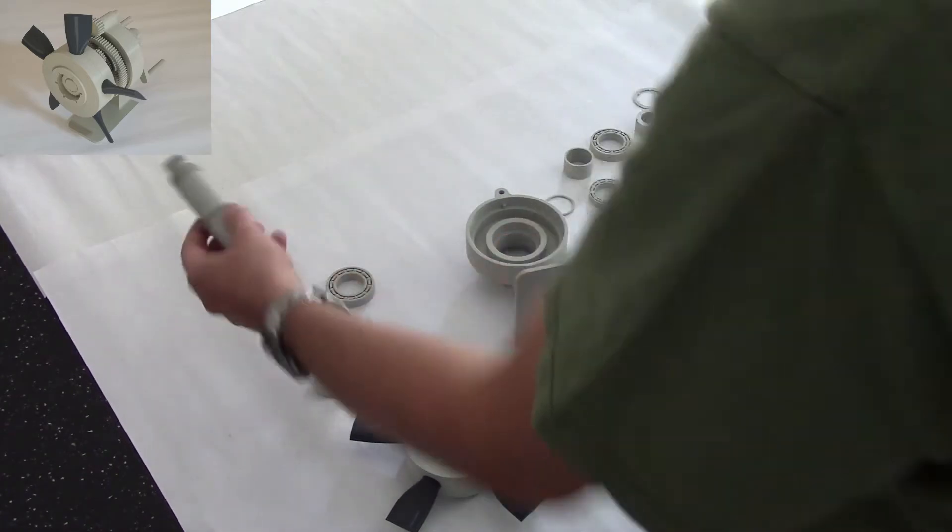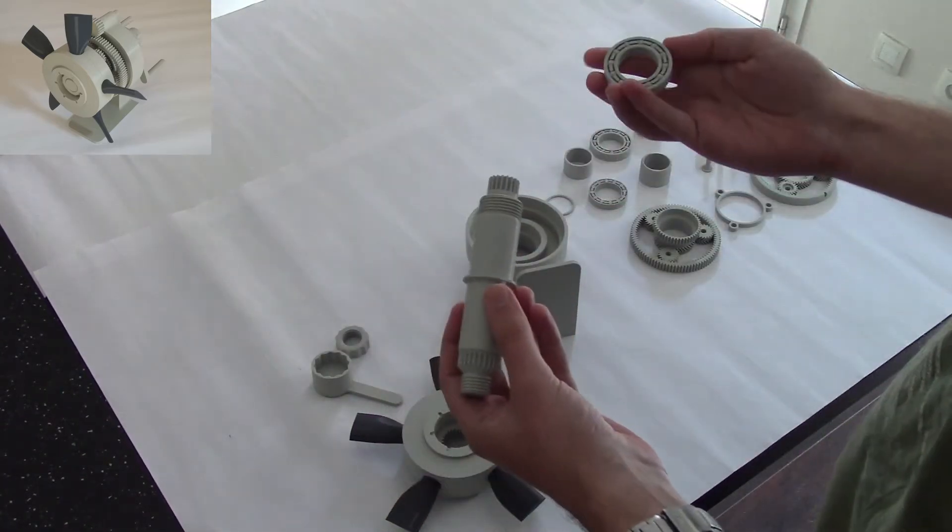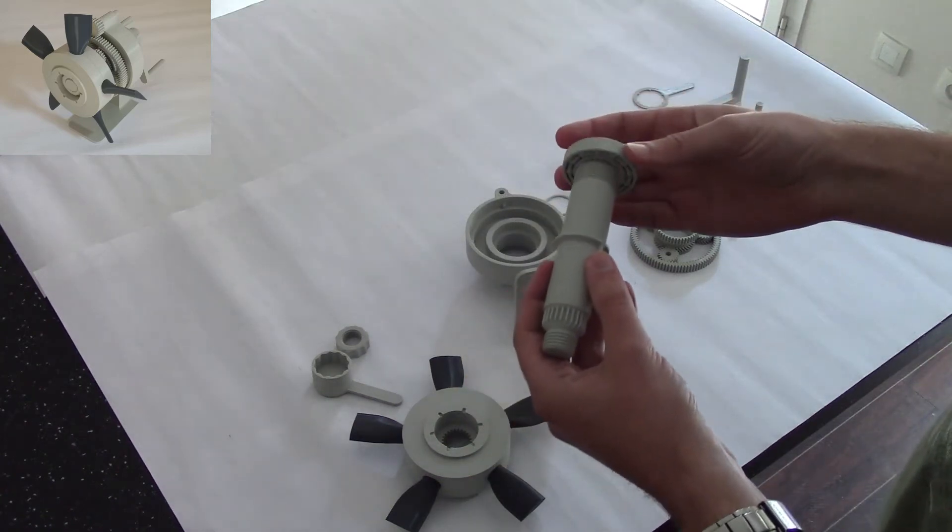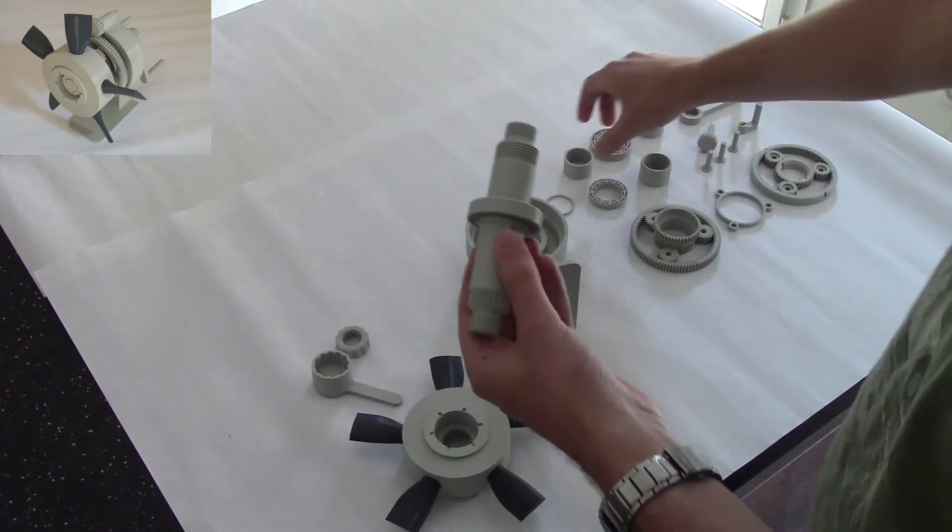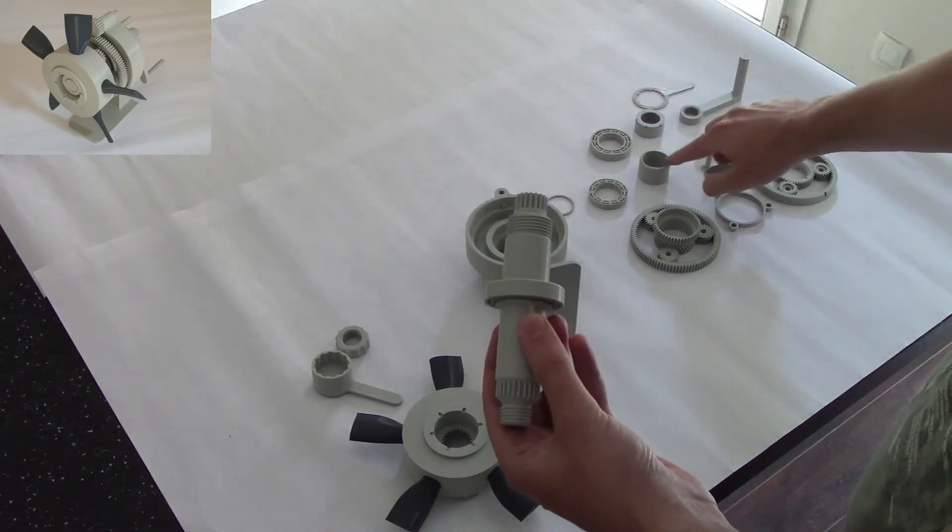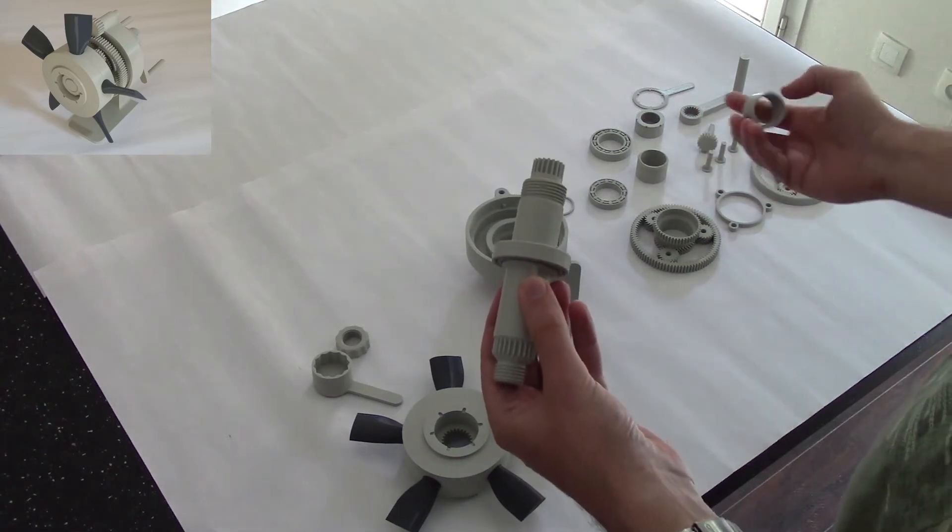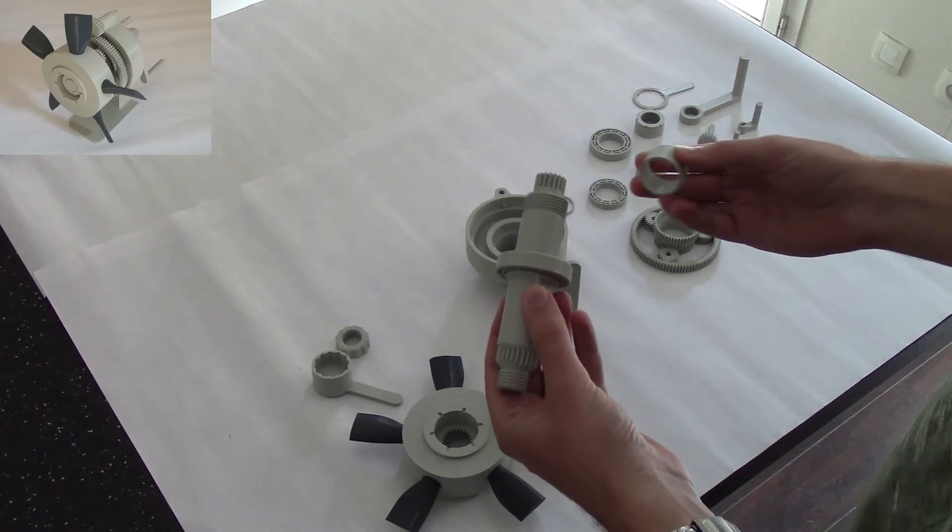We take the main shaft. You can start by placing a bearing around it, and then spacer number one. Spacer number one is slightly shorter than spacer number two and doesn't have the chamfer on it.